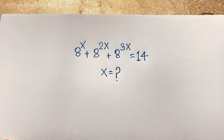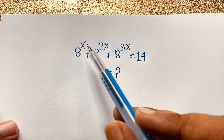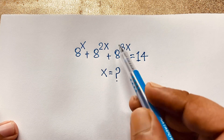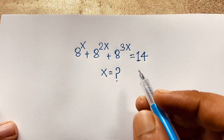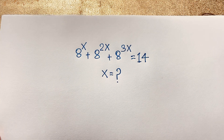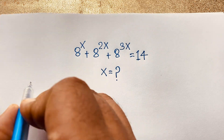Everyone, welcome to Rusa's Classroom. Today we have solved an interesting Maths Olympiad question: 8 to the power x plus 8 to the power 2x plus 8 to the power 3x is equal to 14. What is x equal to? How to solve this interesting Maths Olympiad question? Here is our math solution.